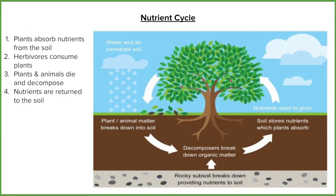The nutrient cycle looks at where nutrients come from and where they go. Plants take in nutrients in order to grow and build some of their own nutrients through photosynthesis. When leaves fall off in winter or when plants die, they go into the soil through decomposition. Animals also decompose, so nutrients end up back in the soil where they are taken up by roots in order to grow again.